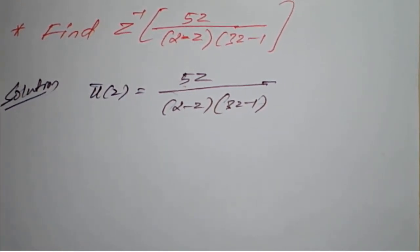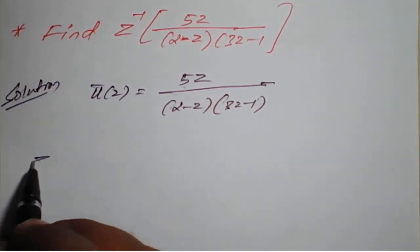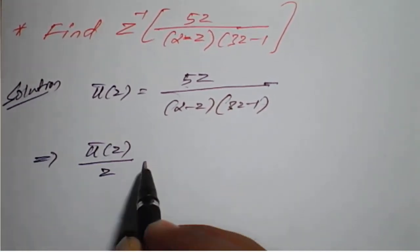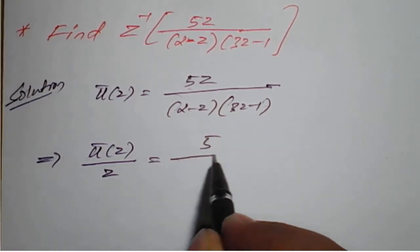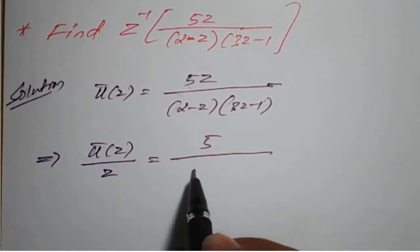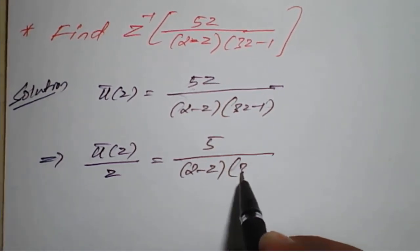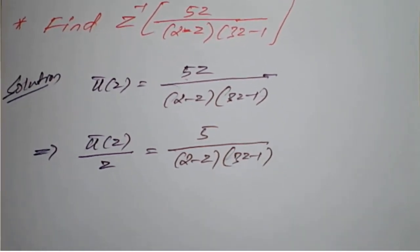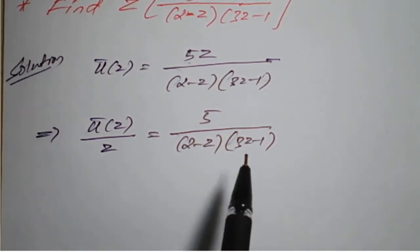Once we have set up u'(z), we cross-multiply z to the left-hand side. This can be written as u'(z) divided by z is equal to 5 divided by (2 minus z) into (3z minus 1).